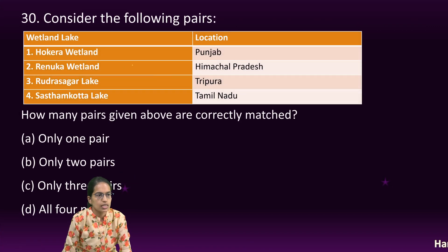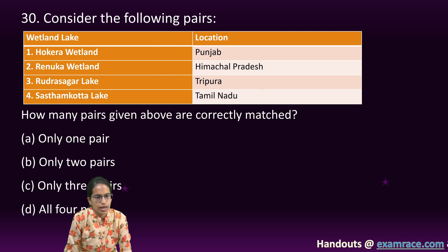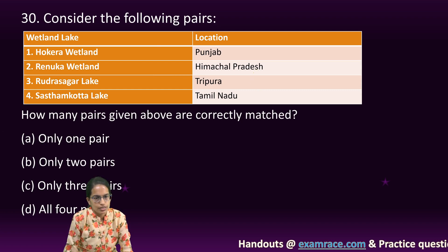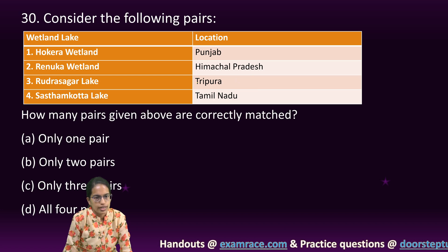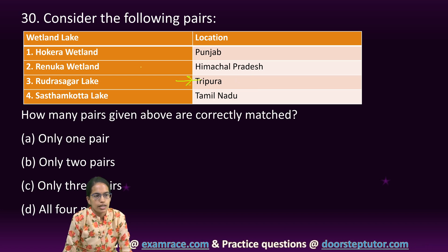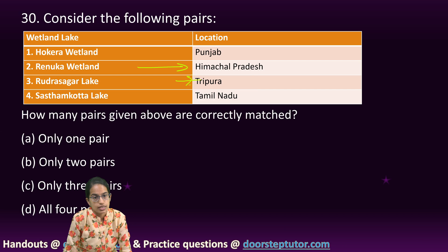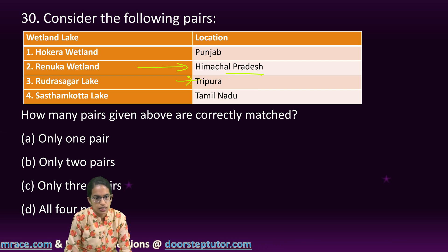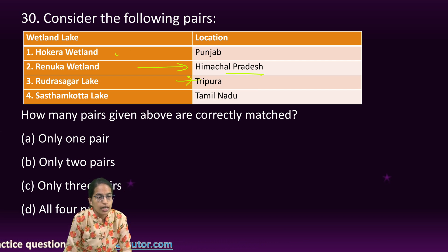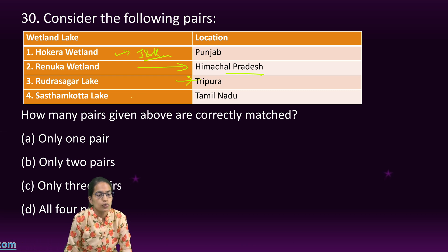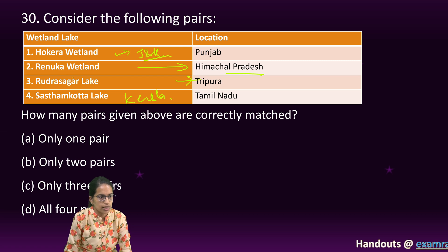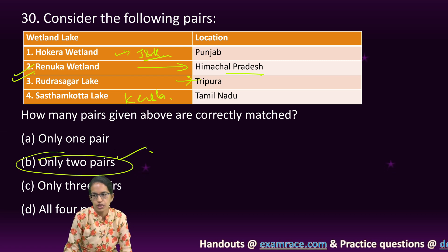The last question in this set asks to consider pairs of lakes and their locations — which are correctly matched. Rudrasagar is located in Tripura — correct. Renuka Lake is one of the largest wetlands in Himachal Pradesh — correct. Hokera wetland is in Jammu and Kashmir — incorrect. Sasthamkotta is in Kerala — incorrect. So only two pairs are correct from the given choices.